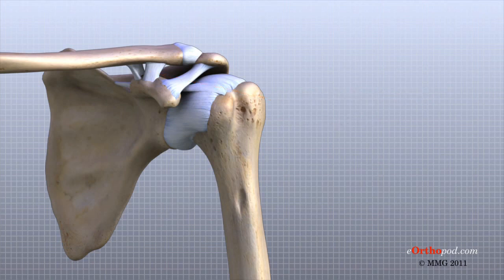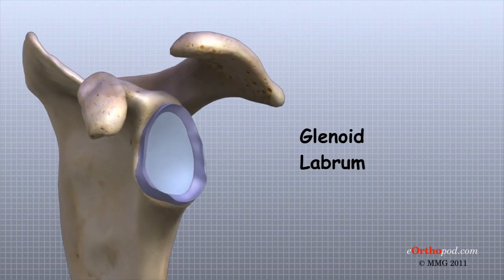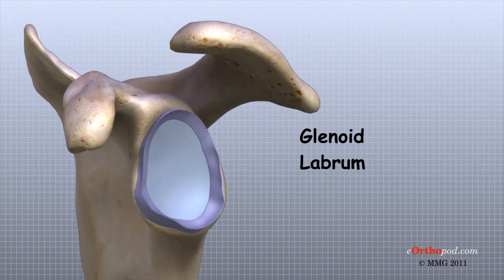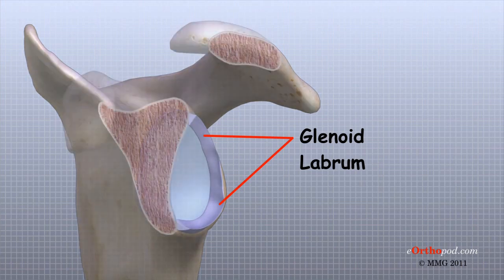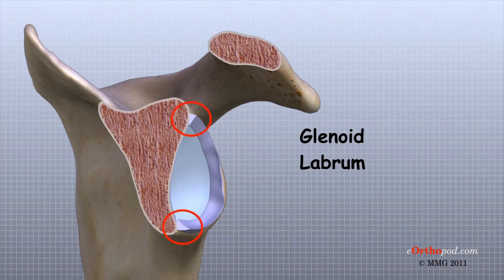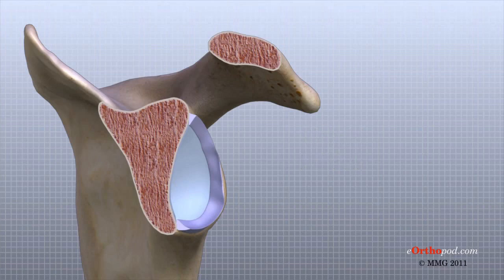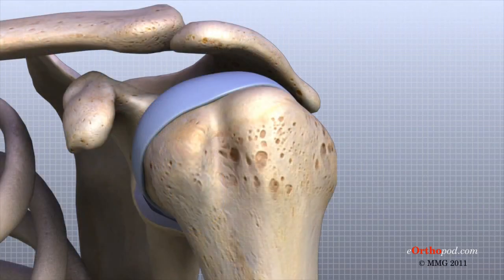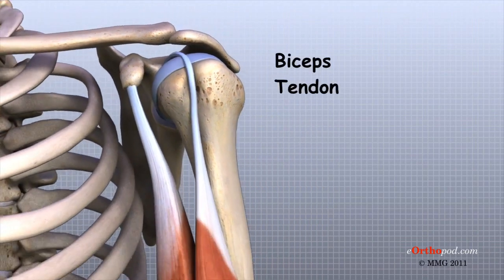A special type of ligament forms a unique structure inside the shoulder called the labrum. The labrum is attached almost completely around the edge of the glenoid. When viewed in cross-section, the labrum is wedge-shaped. This wedge shape and the way the labrum is attached create an elevated rim around the glenoid socket, creating a deeper cup for the ball of the humerus to fit into. The labrum is also where the biceps tendon attaches to the glenoid.